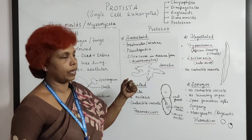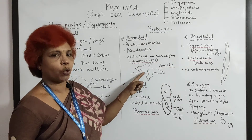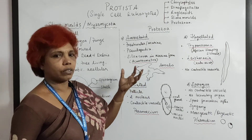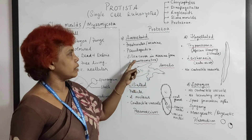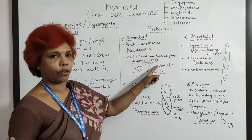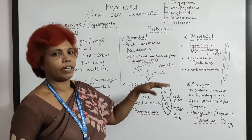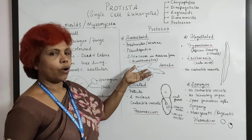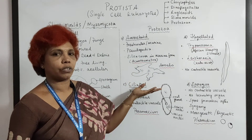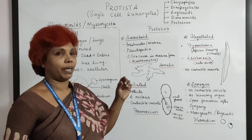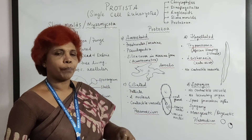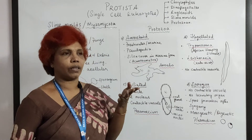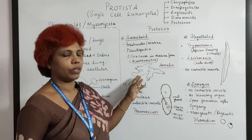They have a contractile vacuole, which is very important because they are freshwater or marine forms — it maintains water balance through osmoregulation. Marine forms like acanthometra have their body covered by silica to withstand water currents. Entamoeba histolytica causes dysentery; it is not completely aquatic but lives in subterrestrial pond-bottom environments. Entamoeba has one or two contractile vacuoles and only one pseudopodium, whereas amoeba has more pseudopodia.